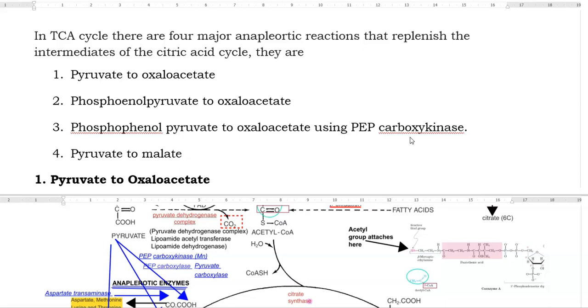They are pyruvate to oxaloacetate step. The next one is phosphoenol pyruvate to oxaloacetate. The next one is phosphoenol pyruvate to oxaloacetate using PEP carboxykinase enzyme and the final one is pyruvate to malate. We will try to see one by one.